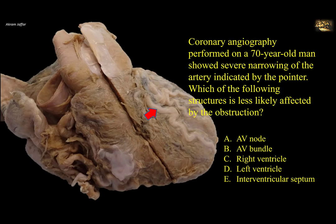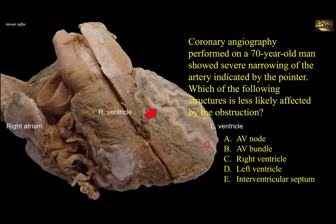Coronary angiography performed on a 70-year-old man showed severe narrowing of the artery indicated by the pointer. Which of the following structures is less likely affected by the obstruction? This is an anterior view of the heart showing the right atrium, right ventricle, and the left ventricle. Note that the right ventricle forms most of the anterior surface. Also note the anterior interventricular sulcus, which separates the right ventricle from the left ventricle on the anterior surface of the heart. It contains the anterior interventricular artery and the great cardiac vein.